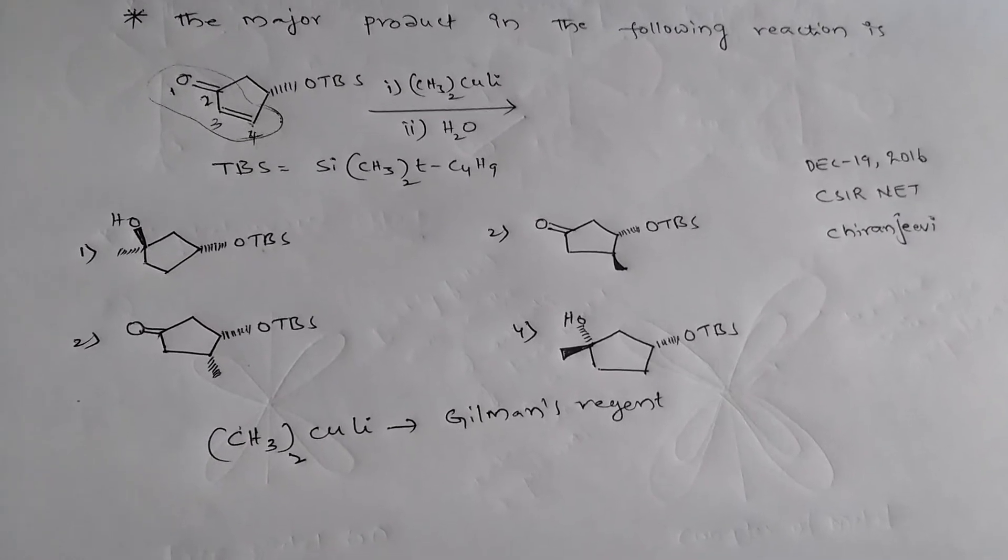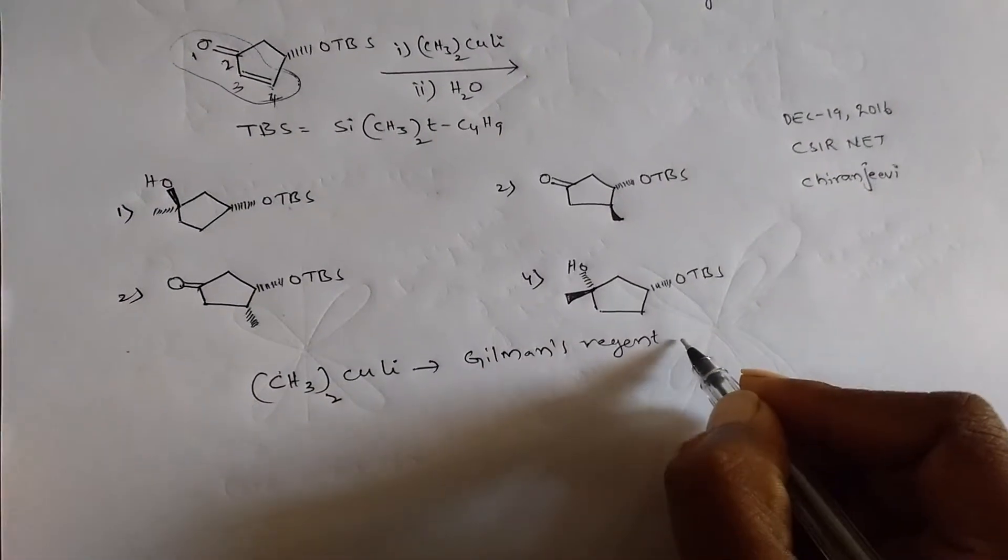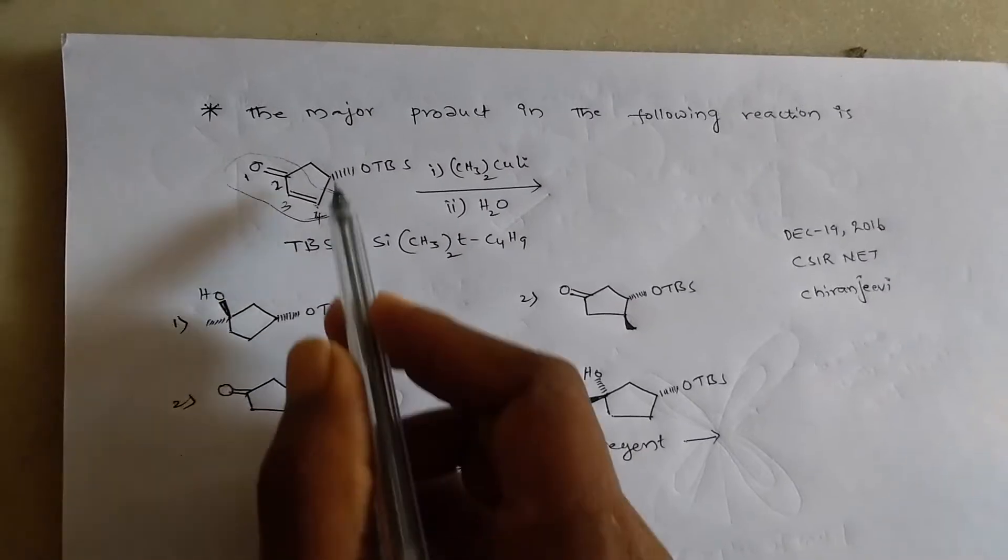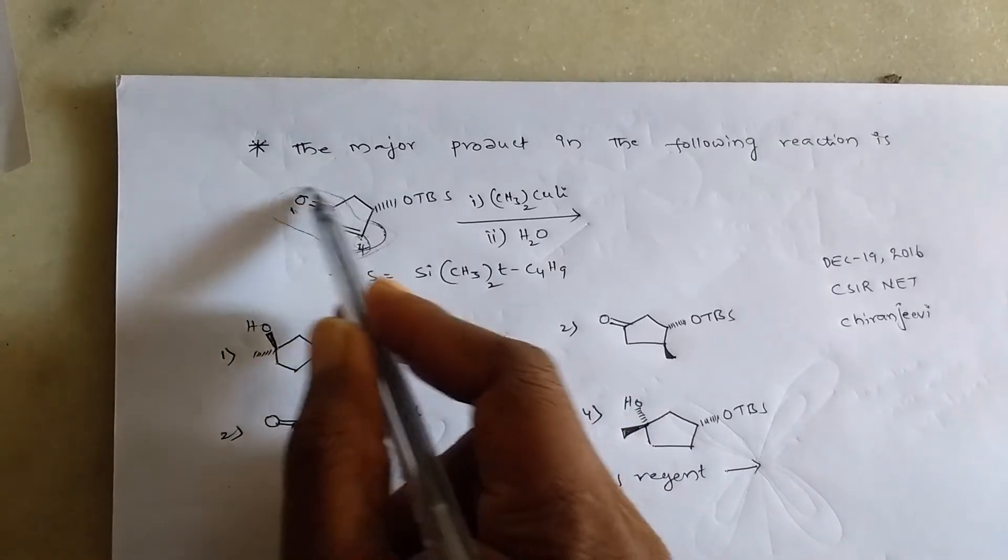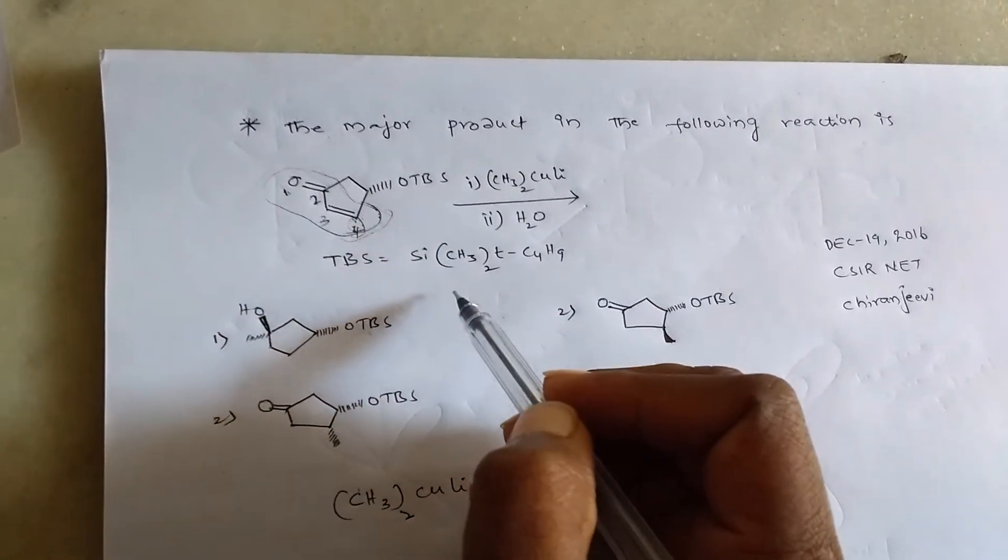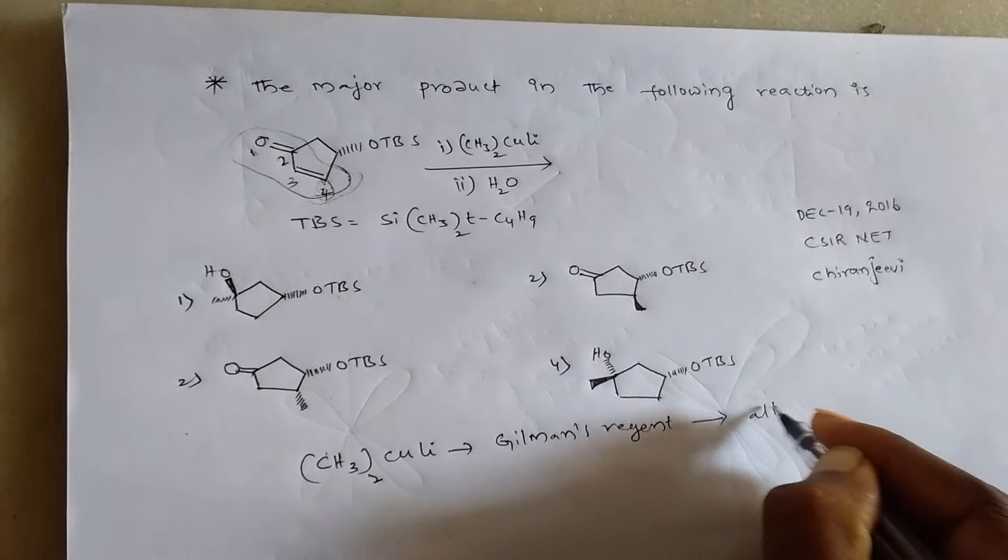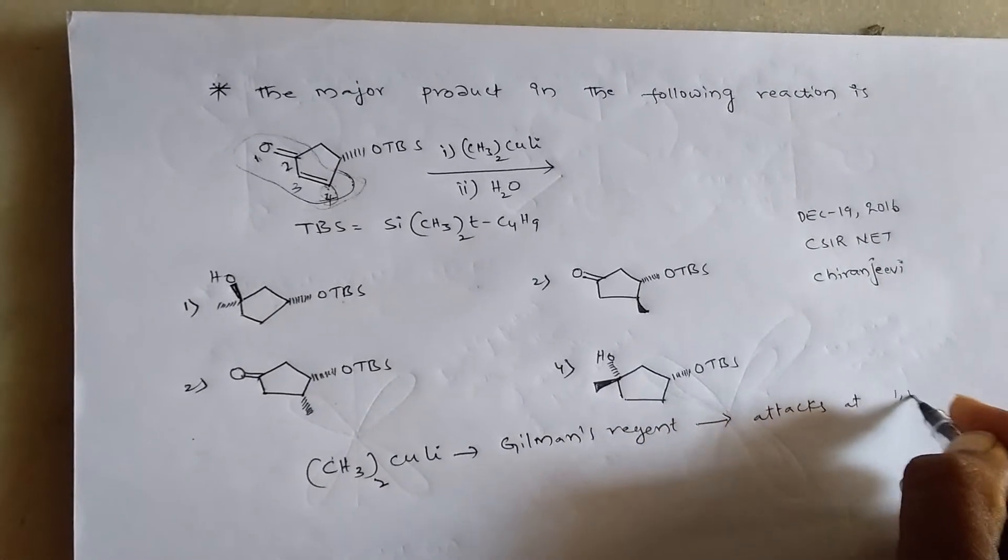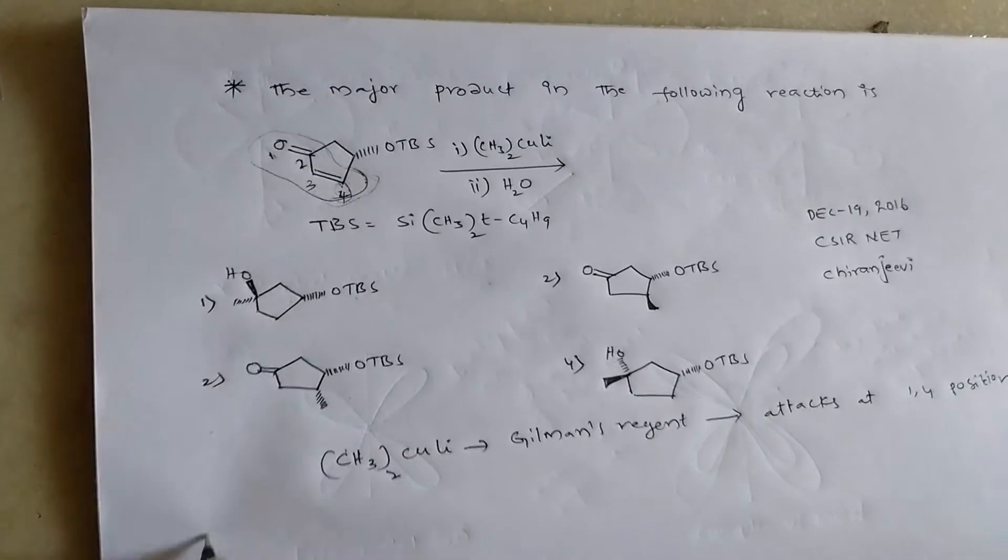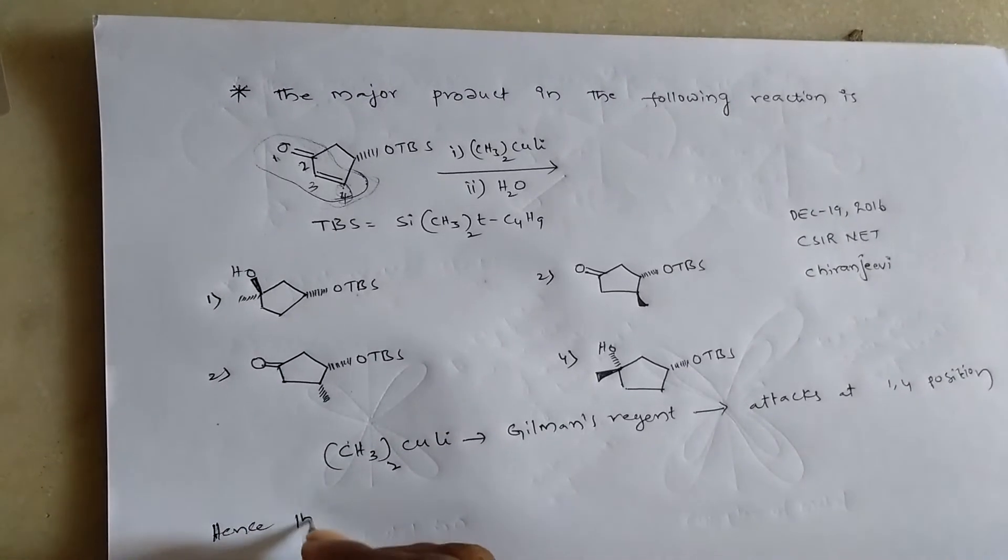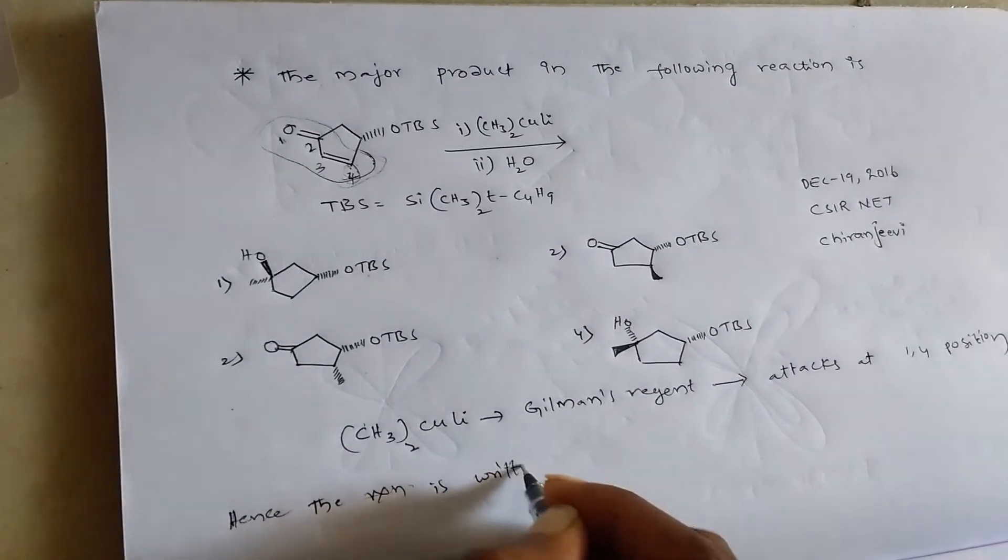So we have four options, which is the right one. The main property of Gilman's reagent is, the Gilman's reagent attacks carbonyl carbon at fourth position, one fourth position. This is the major point of the Gilman's reagent. Gilman's reagent attacks carbonyl carbon at one fourth position. Hence, the reaction is.